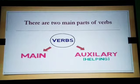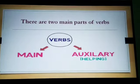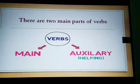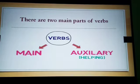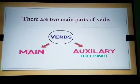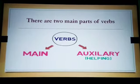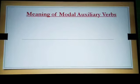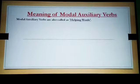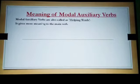There are two main parts of verbs: the main verbs and the auxiliary verbs. Main verbs are the action words, whereas auxiliary verbs are helping words. Today we are going to learn about auxiliary verbs and which verbs come under auxiliary verbs.